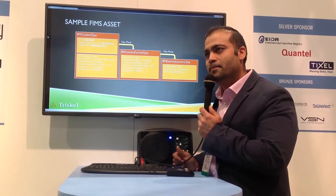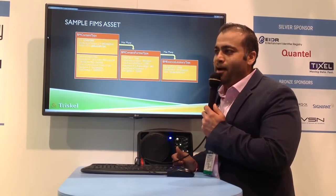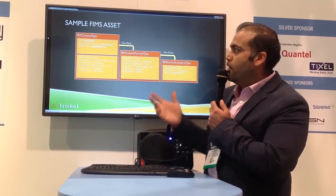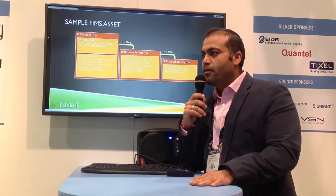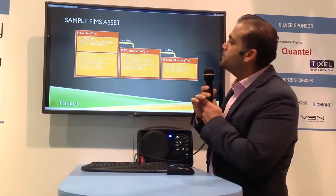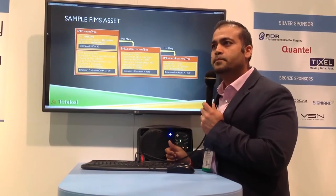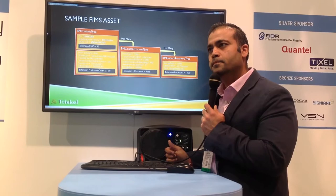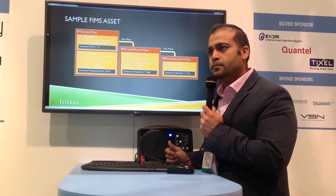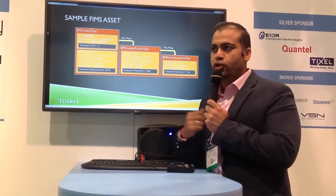We jumped from media to asset — what is an asset with media in this case? I'm using them interchangeably here, so it is one and the same. You say that you can have an ID on the asset. I assume that FIMS should actually mandate some of those IDs or whatever descriptors you get. Is that true? Is there a mandated set?